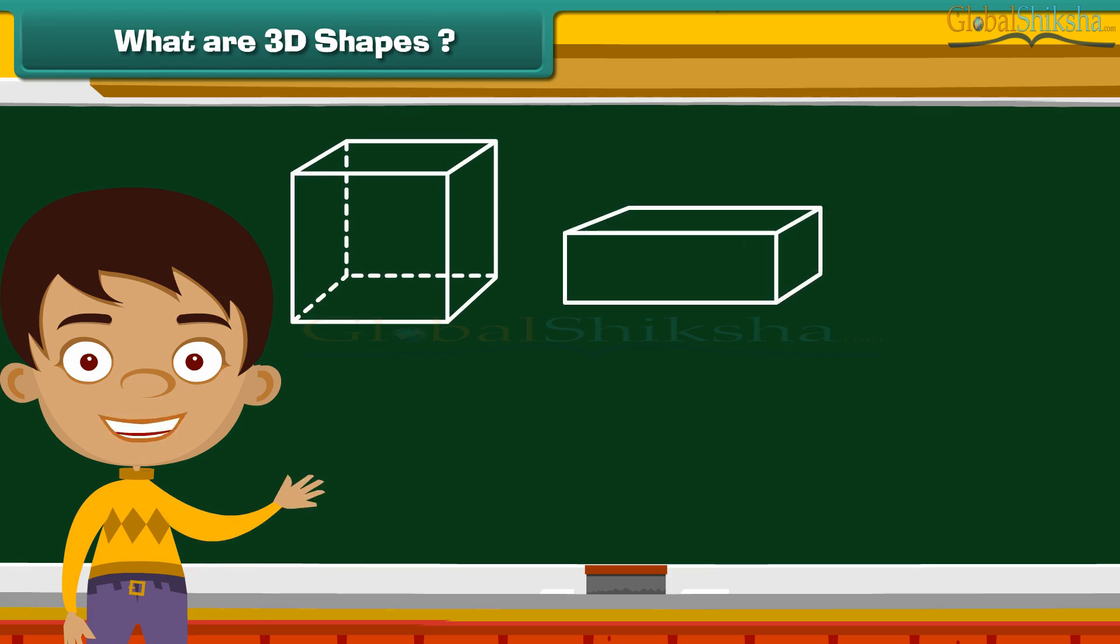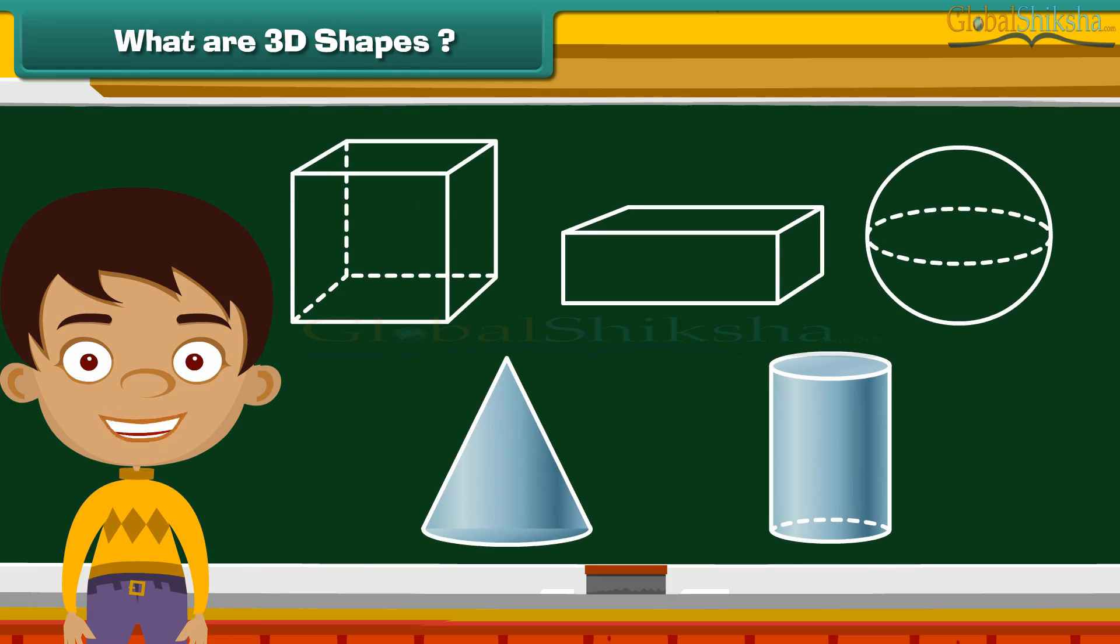Hey, look at these shapes. What did you notice? These shapes have three dimensions: length, width and height. Therefore, we call these shapes three-dimensional shapes. All three-dimensional shapes are solids.